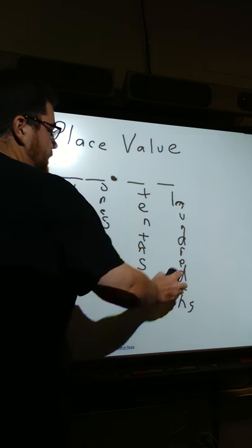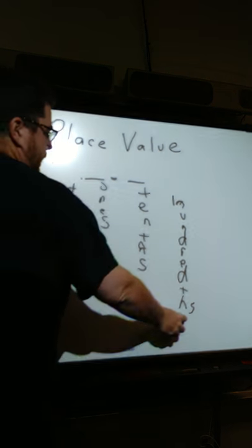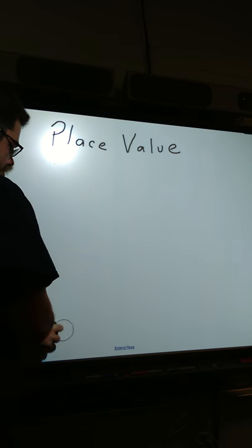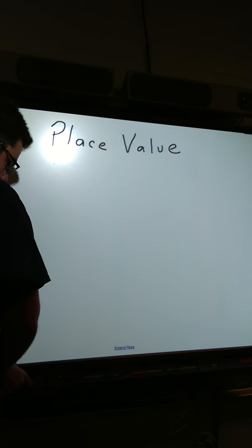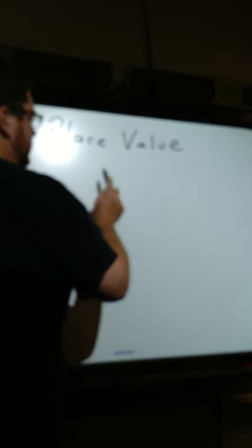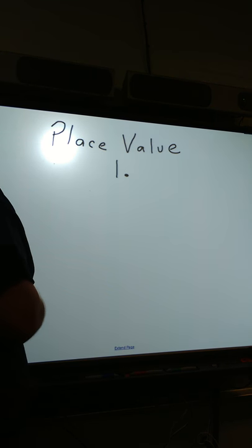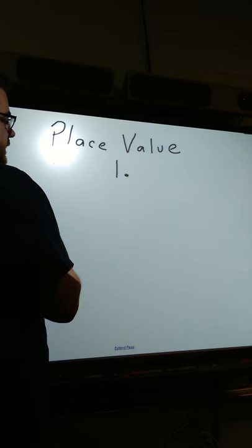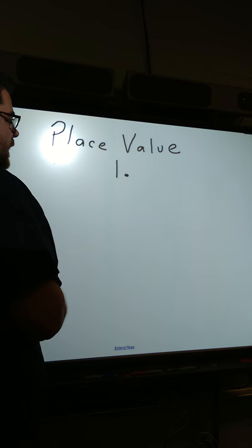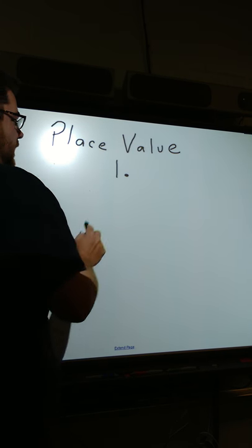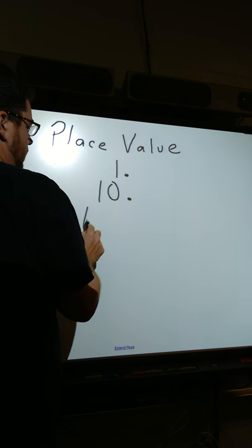Something I like to use that helps students get a clearer picture is a pyramid. What I like to do is start with a one at the decimal point, because that's where the foundation of the place value is. Then, as you move to the left of the decimal, you add a zero.